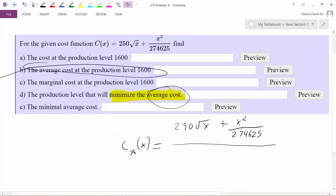And then last but not least, for the minimal average cost. So how do you find the minimal average cost? Well, in the previous step we found the production level, and when they say production level, think about what variable they're asking for. Production level is x, the number of units you're gonna make.